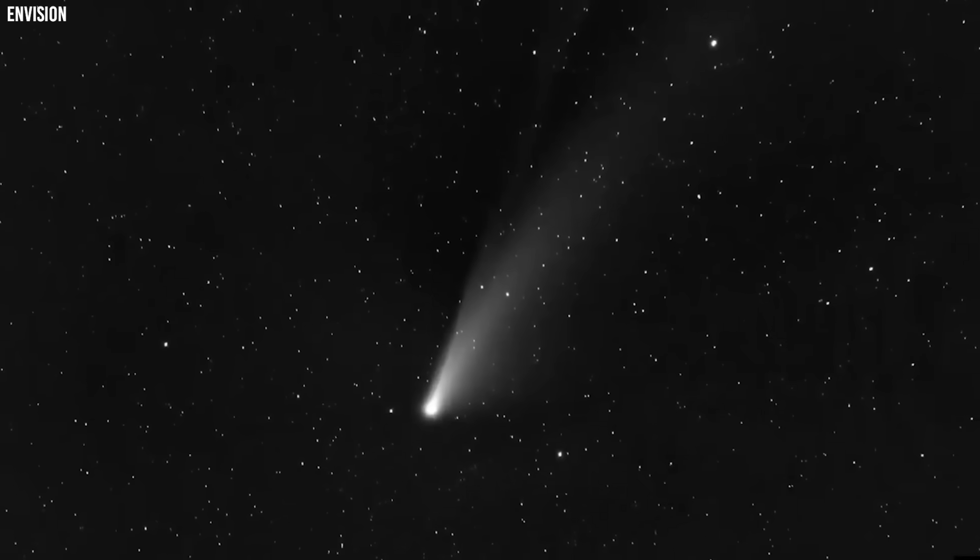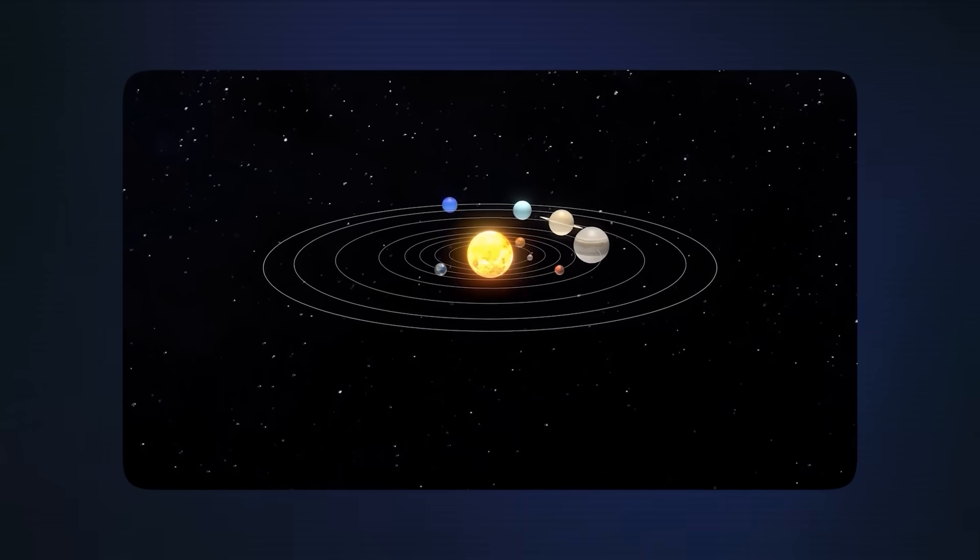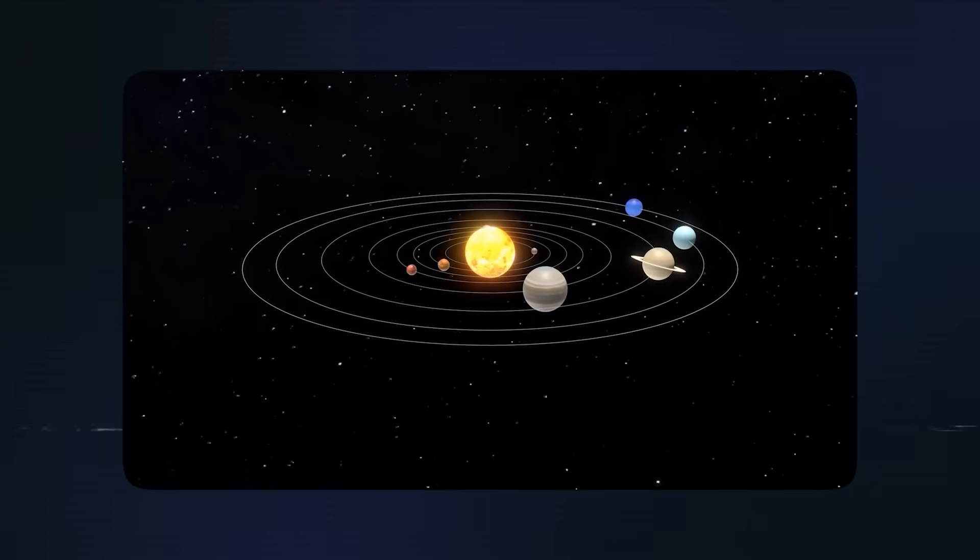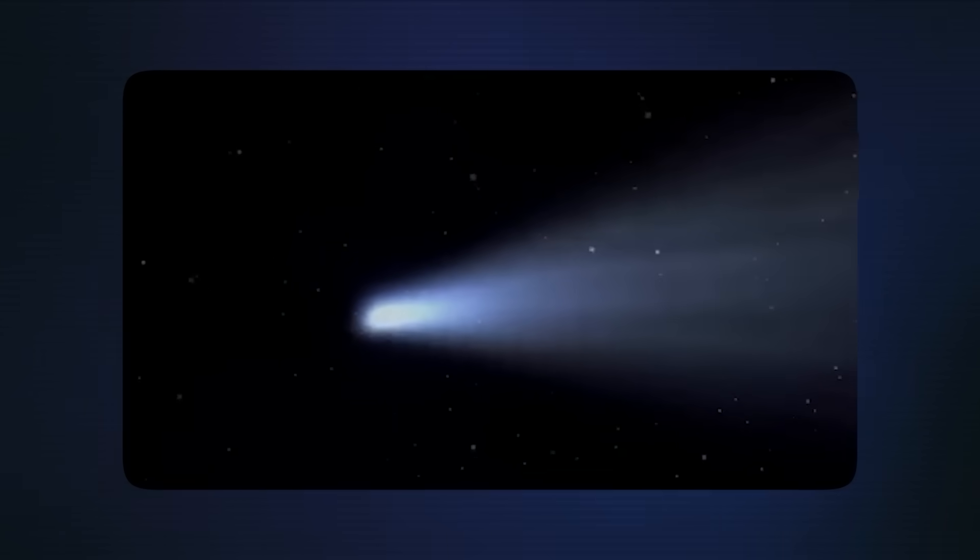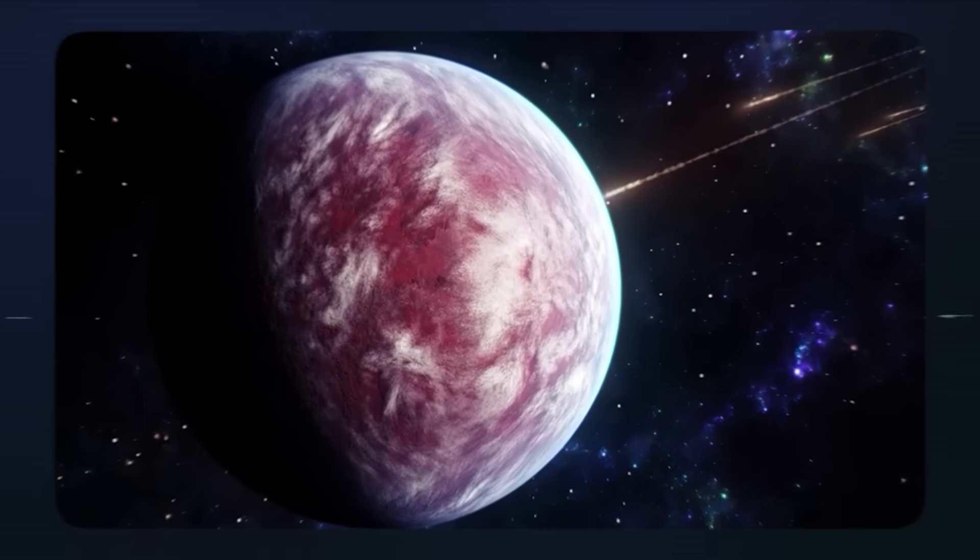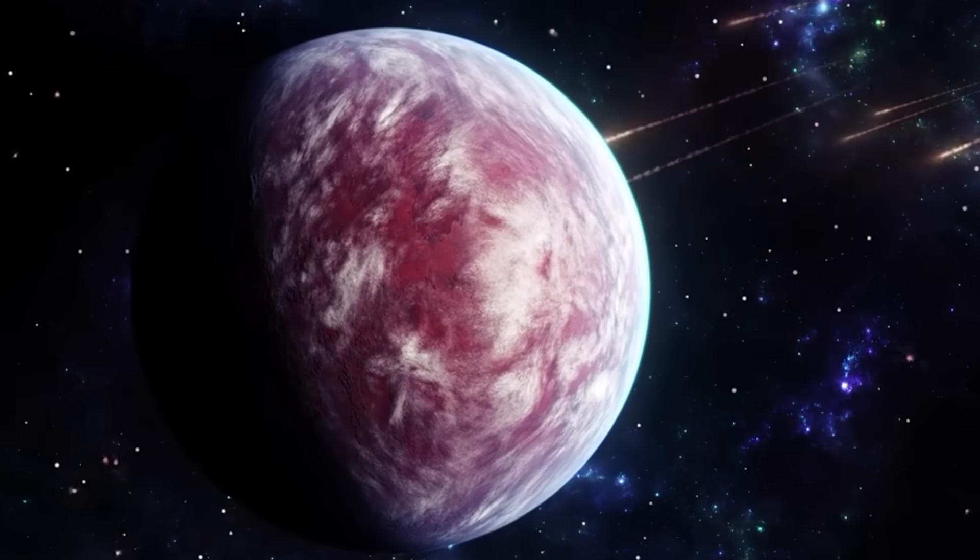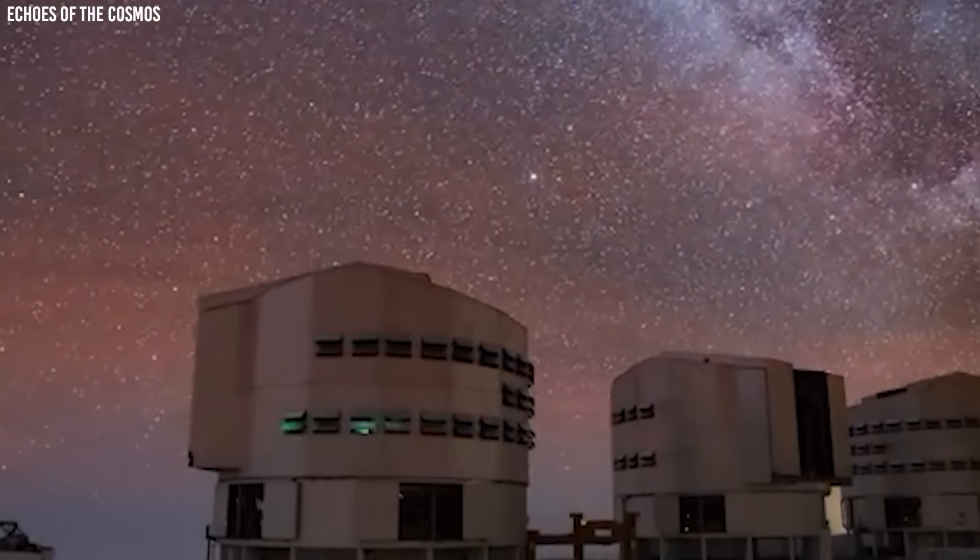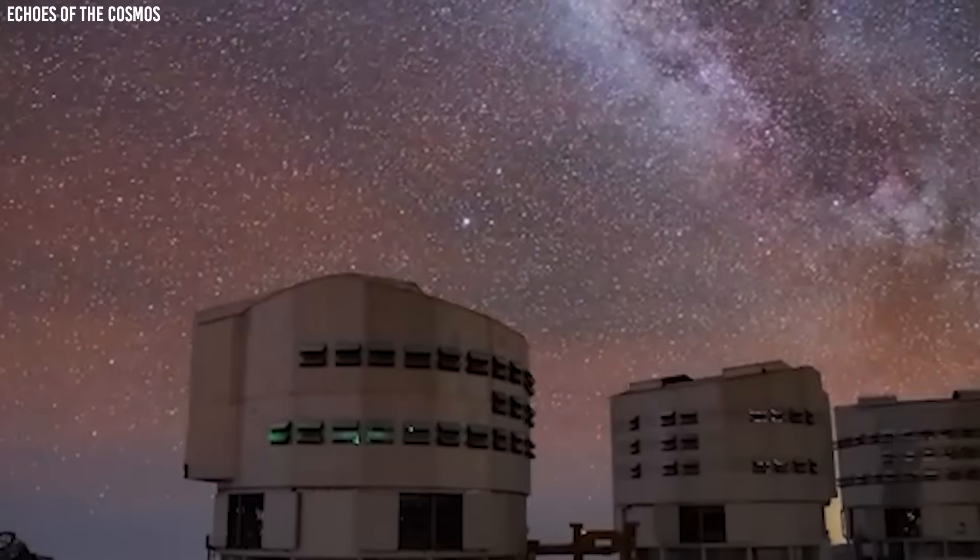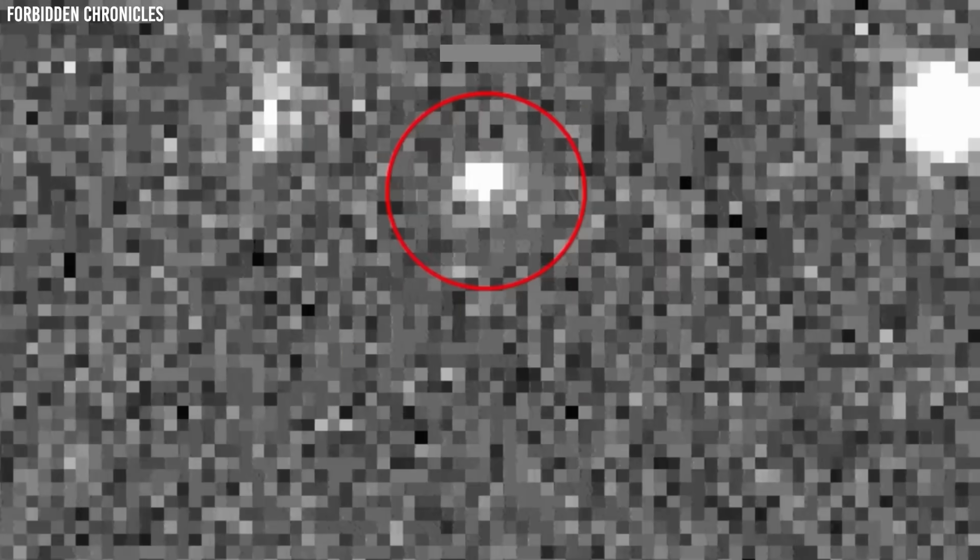The optimal viewing conditions depend heavily on your local light pollution levels and atmospheric conditions. From urban areas, SWAN may be difficult to spot without optical aid due to sky glow washing out the fainter parts. Rural observers under dark skies will have a significant advantage, potentially seeing details invisible to city dwellers. The comet's altitude above the horizon also affects visibility, with atmospheric extinction reducing brightness when the comet is low in the sky.